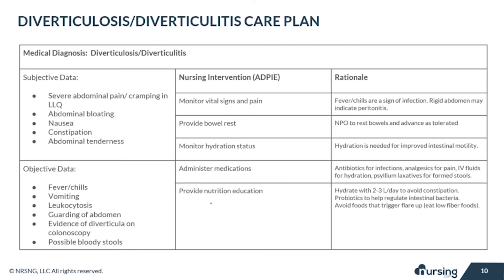The last nursing intervention is to provide nutrition education to your patient. Let them know they should try to hydrate with at least two to three liters of fluid a day, preferably water, to avoid constipation. Probiotics are really helpful to keep regulation of the intestinal bacteria. Tell them to avoid foods that trigger any flare-ups, try to eat a low-fiber food diet — this might be a trial and error process where they have to test things out.